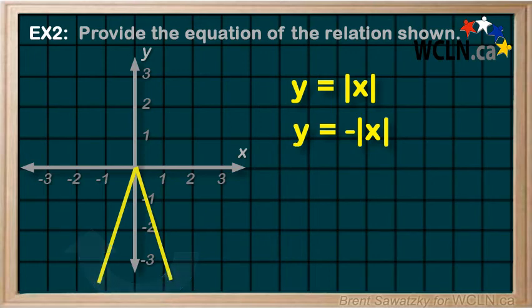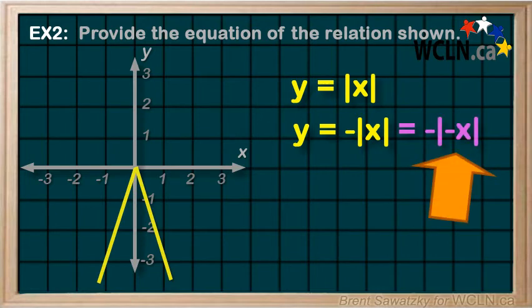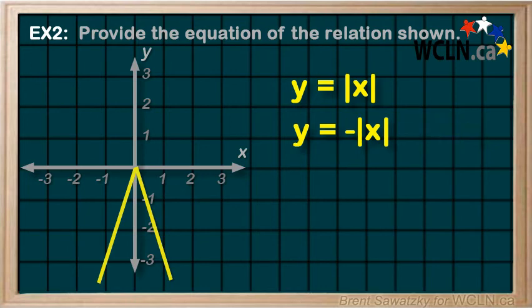And also, if we plugged in a negative in with the x into the absolute signs, it would come out positive anyway. Again, no change. So, the horizontal reflection for this is irrelevant and we're skipping that.